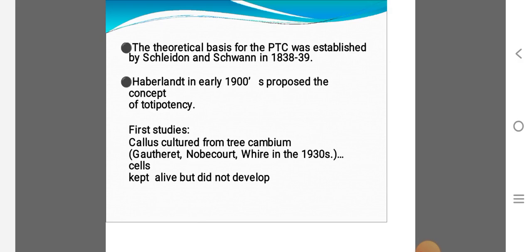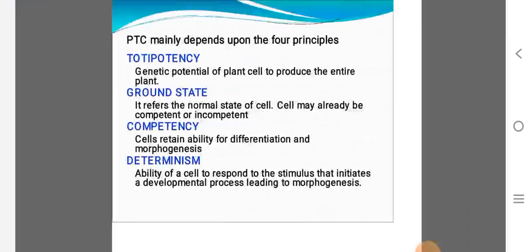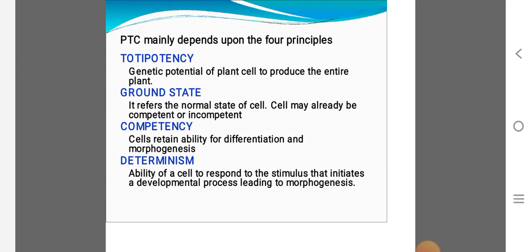Totipotency means the ability of a single cell to divide and produce all the differentiated cells in the organism. These cultures are first studied, observed in callus culture from the tree cambium.